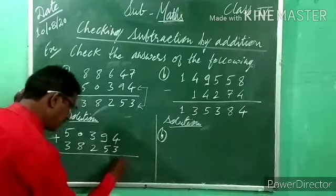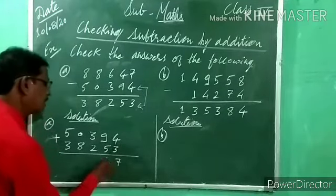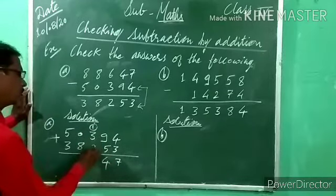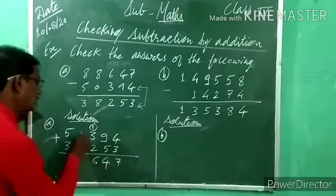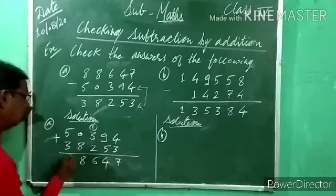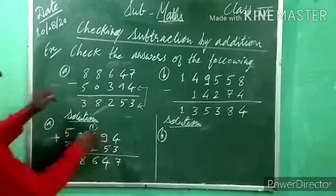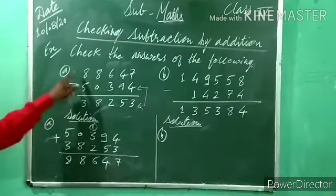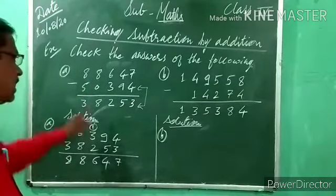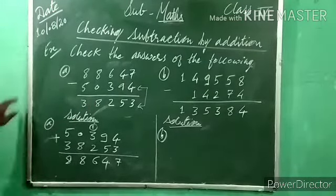4 plus 3 = 7. 9 plus 5 = 14 — write 4, carry 1. 1 plus 3 = 4. 0 plus 8 = 8. 5 plus 3 = 8. So answer is 88,647 — same as the first number. So the answer is correct.